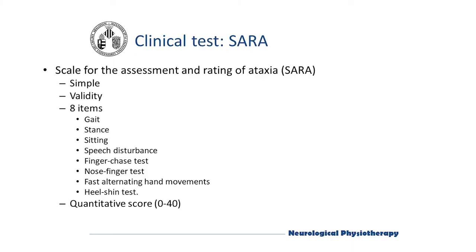Now we will describe SARA. This scale was created as an alternative to ICARS and is administered in a much shorter time. The use of SARA in spinocerebellar ataxia, stroke ataxia, and Friedreich's ataxia has been validated in the literature. SARA evaluates eight items using a quantitative numerical score. For the motor activities of the four extremities — items five to eight — the assessment is carried out bilaterally: three maneuvers are scored on each side and then the mean is used to obtain the total score for that side.